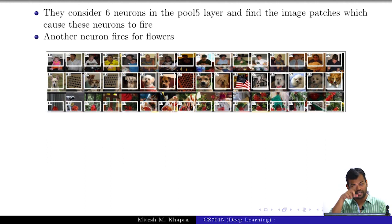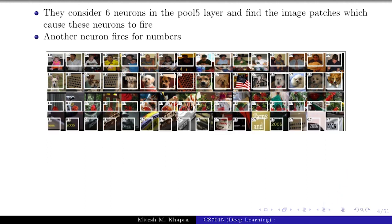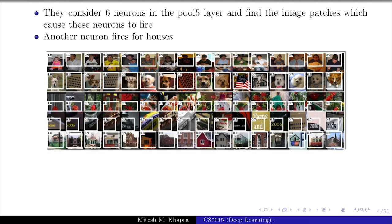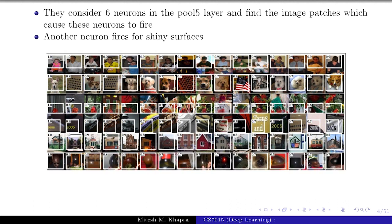There are some images which fire for digits and alphabets written in the images—addresses or dates or billboard signs or something like that. Whenever there are these characters or numerals, these neurons fire. Some neurons fire for houses and then some neurons fire for shiny surfaces.